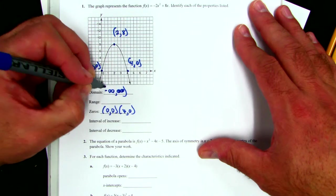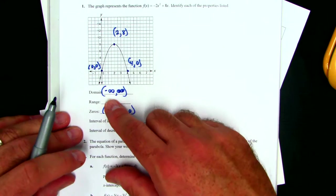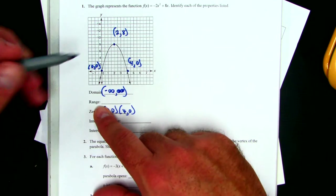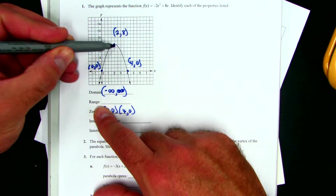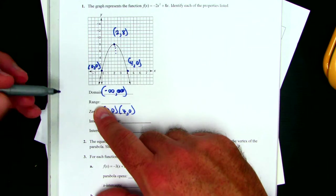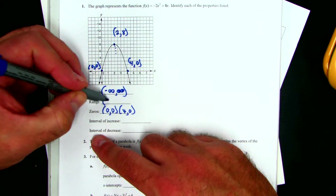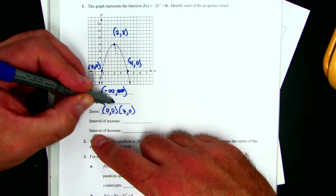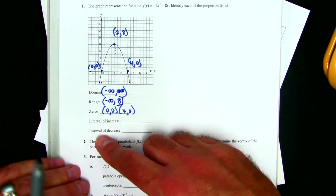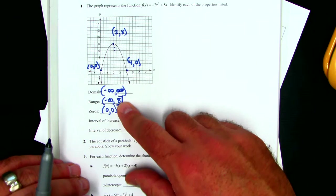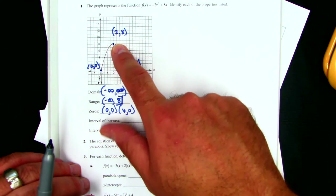And remember those are always in parentheses. The range starts at 8 and goes down for infinity. So that would be negative infinity to the number 8. And 8 has to be in the bracket because it includes 8.